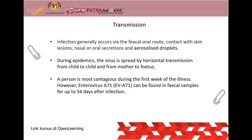During epidemics, the virus is spread by horizontal transmission from child to child and from mother to fetus. A person is most contagious during the first week of illness. However, enterovirus A71 can be found in fecal samples for up to 54 days after infection.